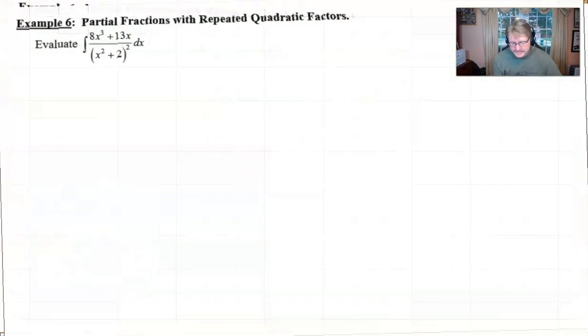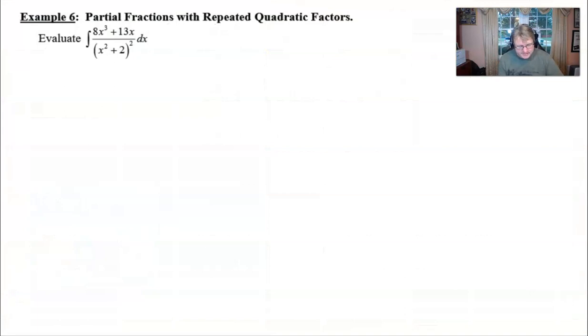So here it is. The question reads, find the antiderivative of 8x cubed plus 13x over x squared plus 2 squared.